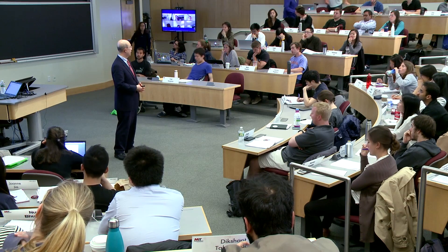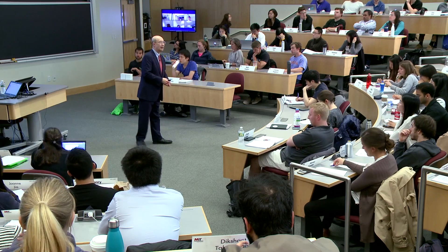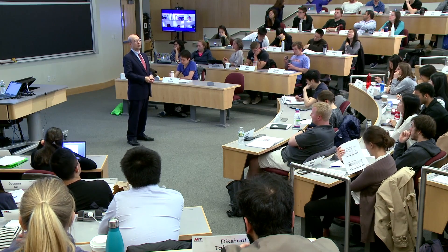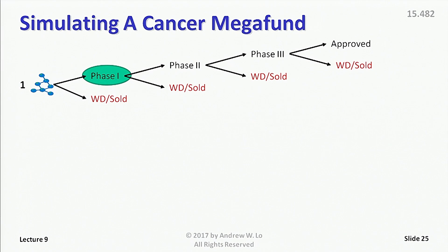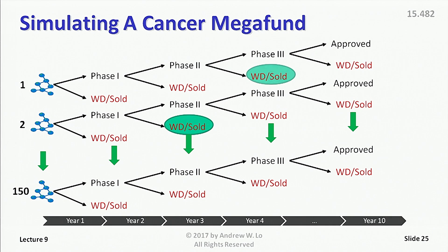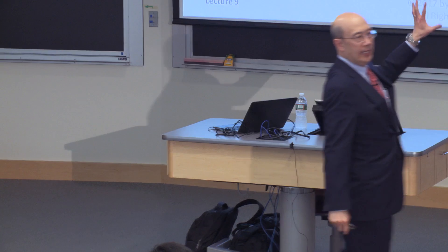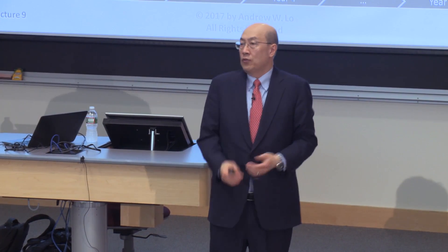The basic idea behind simulating a mega fund is to start off with a particular compound — whether it's a molecule or biologic — and simulate what happens over the course of a 10-year period where it undergoes clinical trials. Maybe it goes to phase one, or maybe it's unsuccessful and has to be withdrawn or sold. In the event that it is successful and goes all the way through to an approved drug, there's a payout. We want to do this for a large number of compounds — say 150 — and in each case we get some kind of cash flow. These are the cash flows we're going to finance with equity and debt.